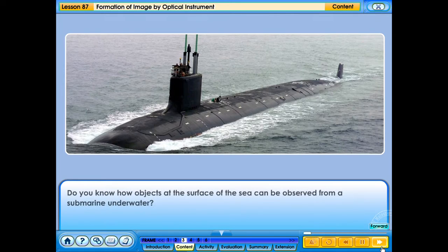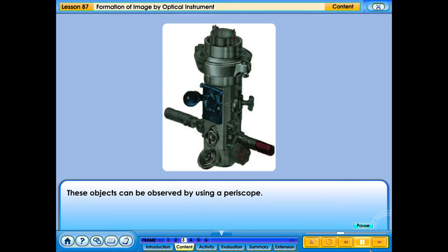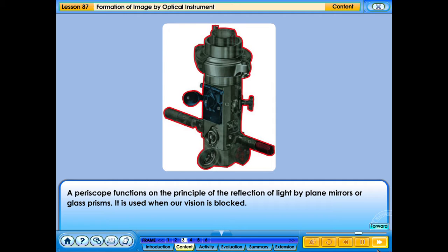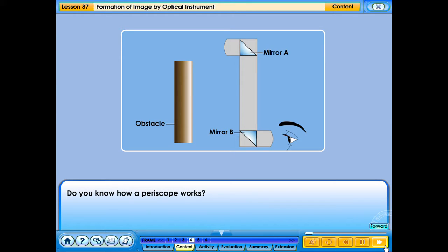Do you know how objects at the surface of the sea can be observed from a submarine underwater? These objects can be observed by using a periscope. A periscope functions on the principle of the reflection of light by plane mirrors or glass prisms. It is used when our vision is blocked.